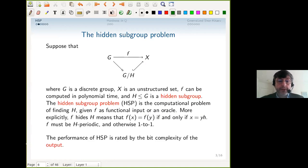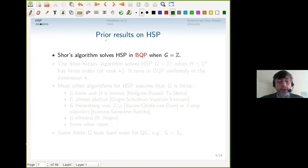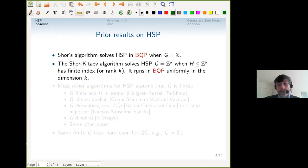Let me summarize prior results. Shor's algorithm started it all—it's a solution to the hidden subgroup problem in BQP when G is the group of integers. This was generalized by Shor himself and finally by Kitaev to solve the hidden subgroup problem when G is Z^k.